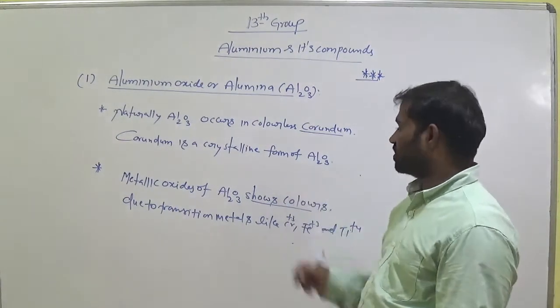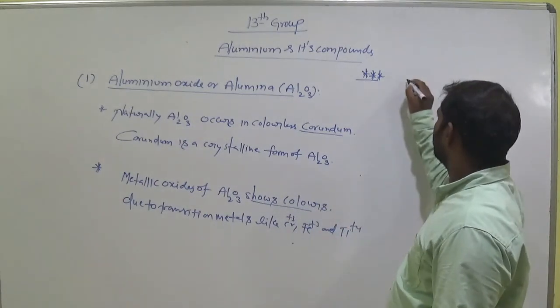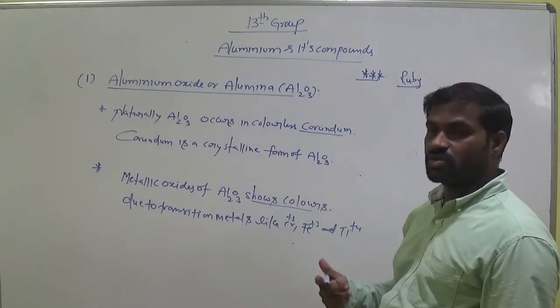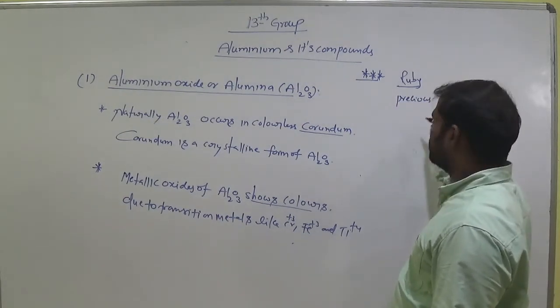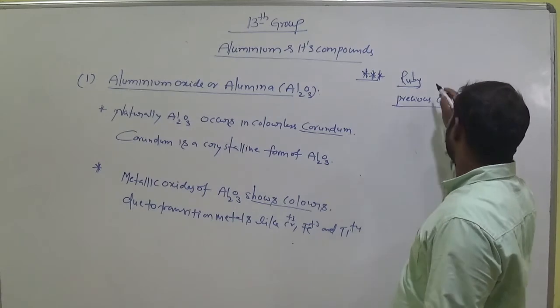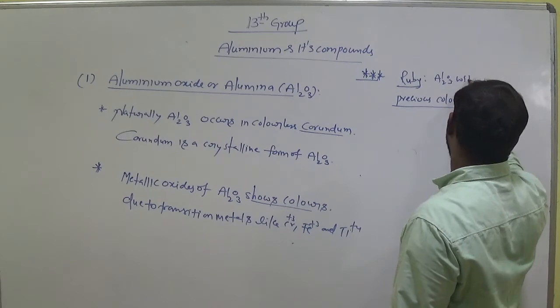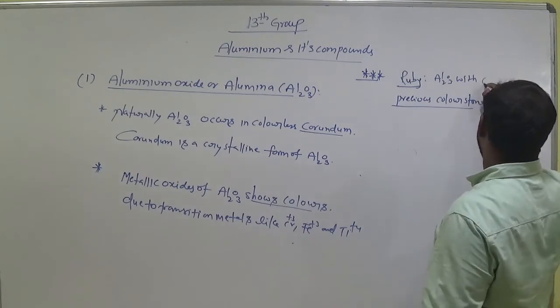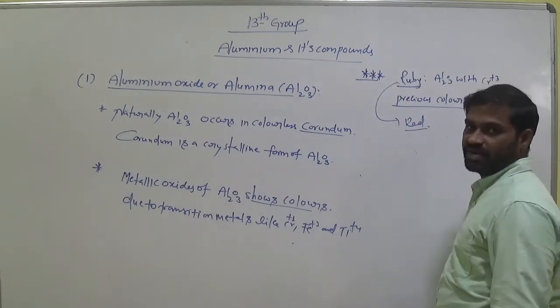Colors of transition metals with Aluminium is very important. When Aluminium with Cr³⁺, that means Ruby. Ruby is a precious, valuable color stone. Ruby means Aluminium with Cr³⁺. The color of ruby is red in color, red color. Keep it in our mind.